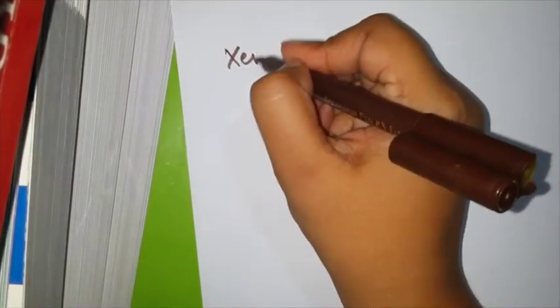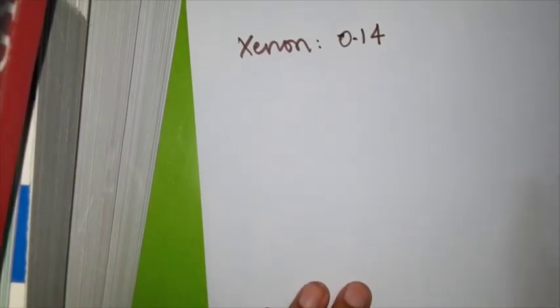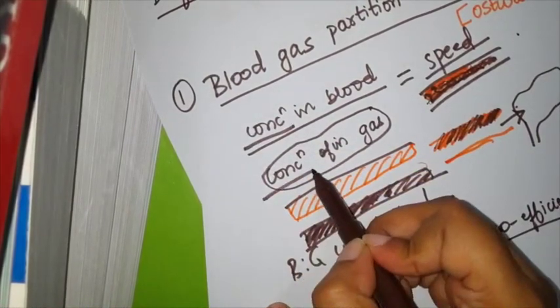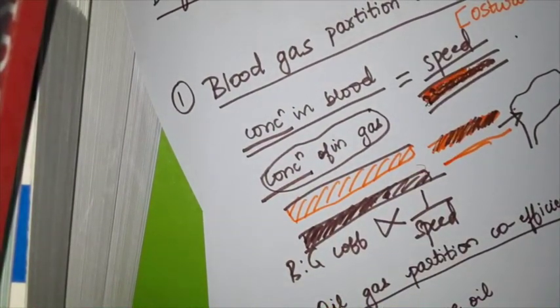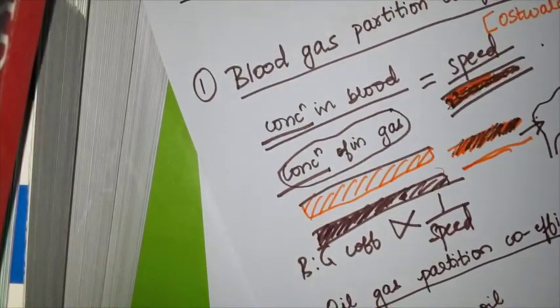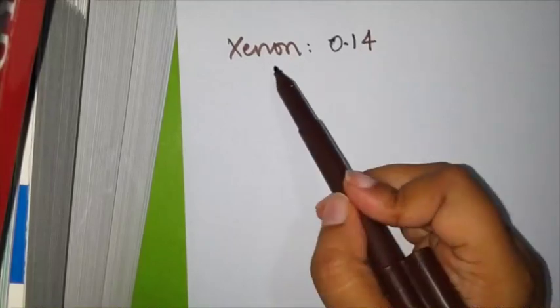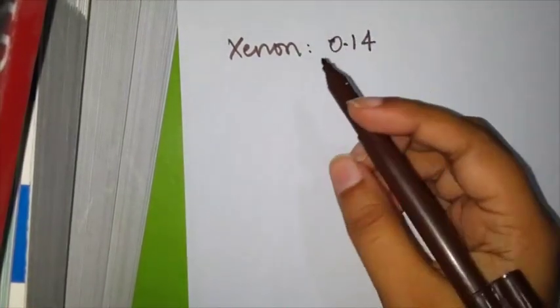I'll give you two examples. One is Xenon. The blood-gas coefficient for Xenon is 0.14. The numerator and the denominator are both concentration, so this is just a mere value with no units. So when you get an MCQ that says blood-gas coefficient is this much mg or ml, that itself rules out that it's a wrong answer. So for blood-gas coefficient, Xenon is 0.14.